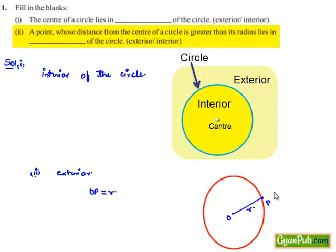If we consider the distance greater than r, then we can say that it always lies outside the circle. Let OR be the distance some r plus d, then it always lies outside the circle. Therefore, a point whose distance from the center of the circle is greater than its radius always lies in the exterior of the circle.